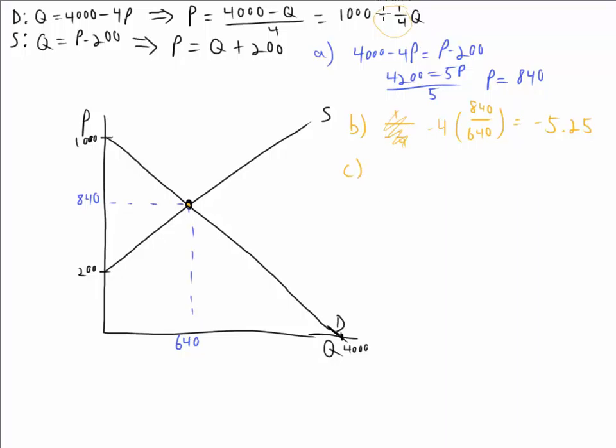The slope of the supply equation is just 1, so we get 1 over 1, which is just 1, times P over Q, 840 over 640. And then that's going to equal 1.3125.